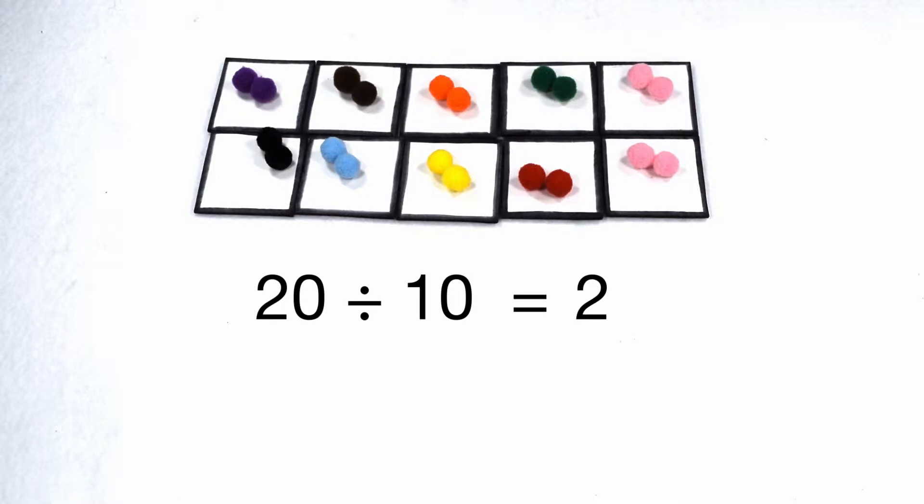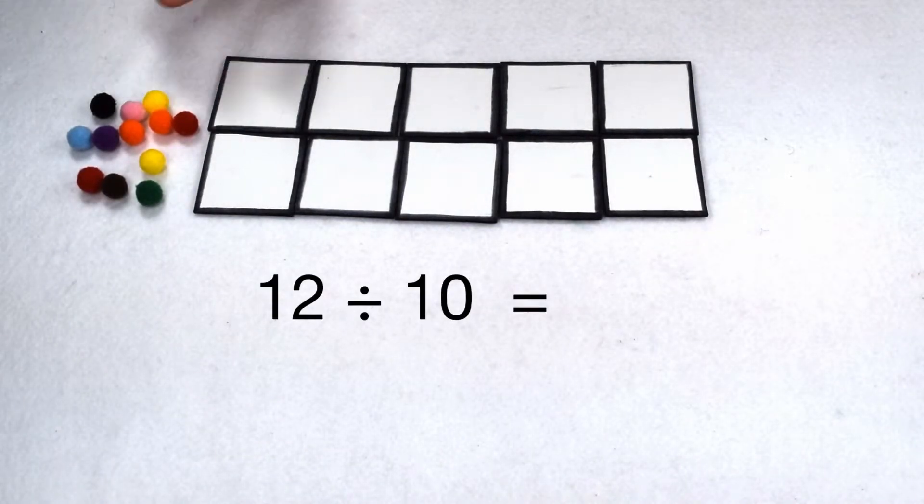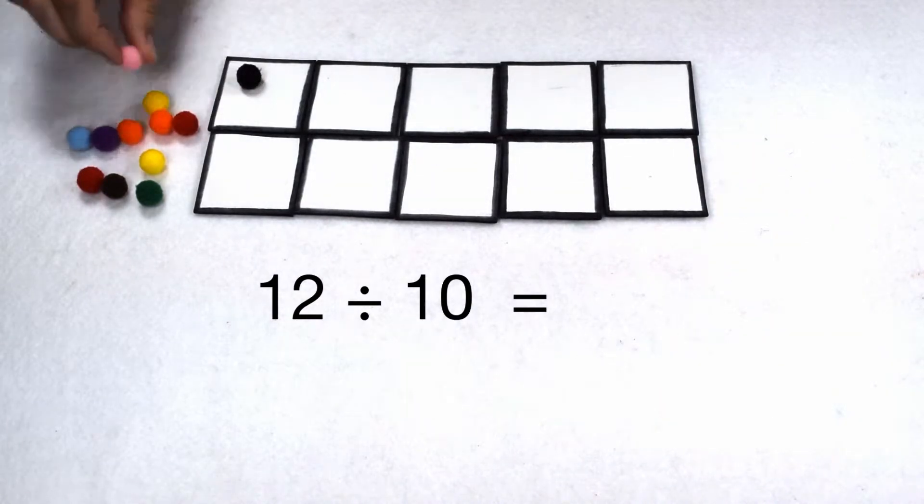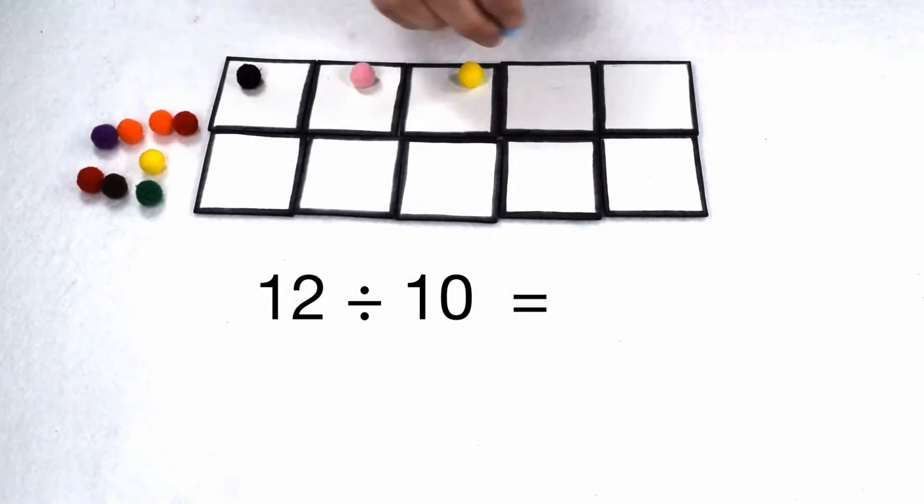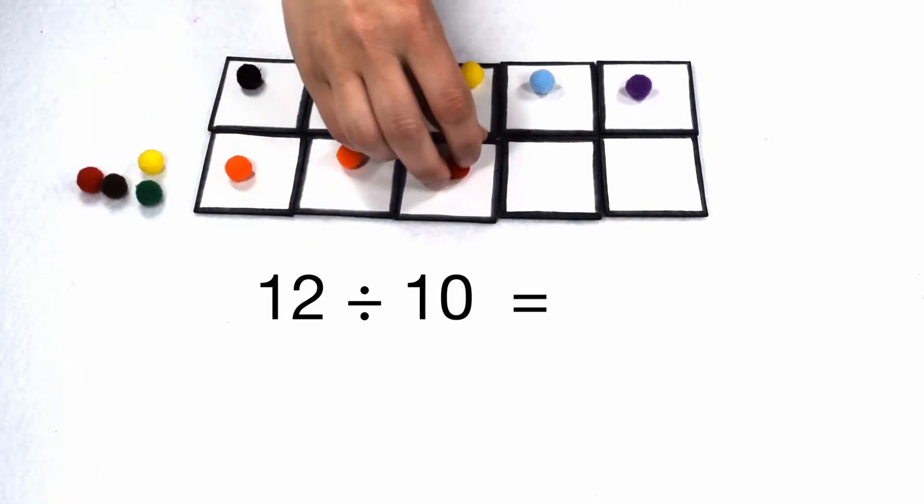When we do that, we see 20 divided by 10 gives us 2. So that proves our theory so far that numbers that end in zero are divisible by 10. Let's try another example, this time that doesn't end in zero. Here we have 12 that we want to divide into 10 groups.